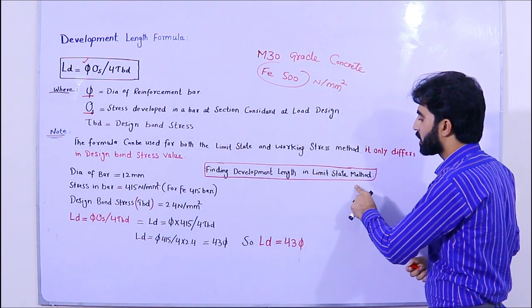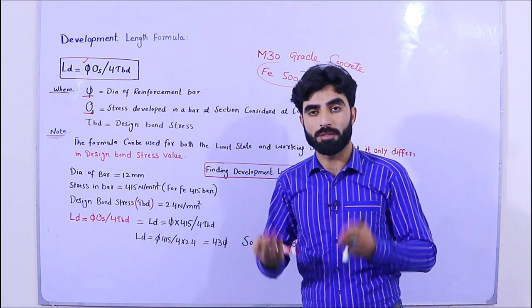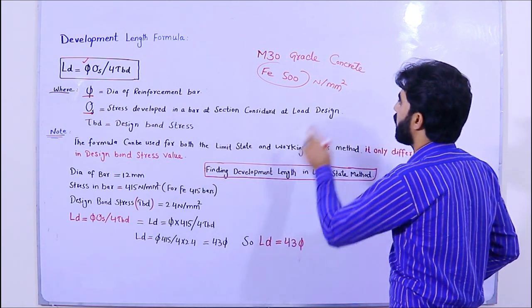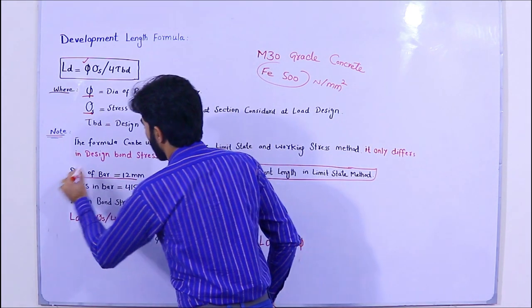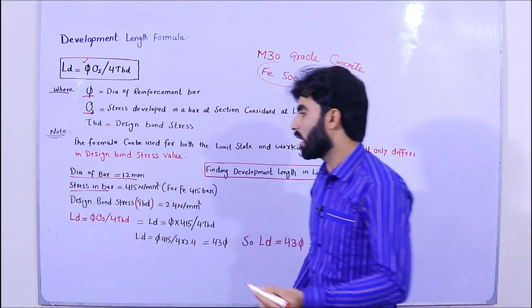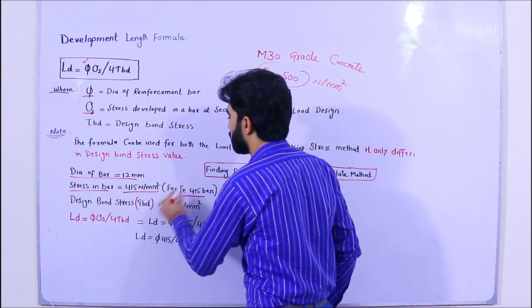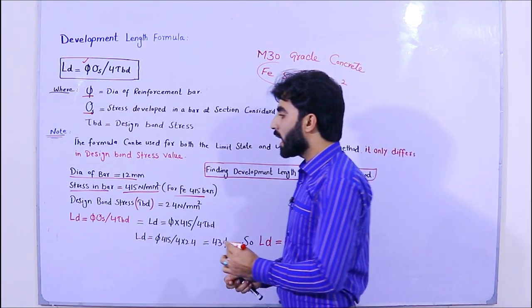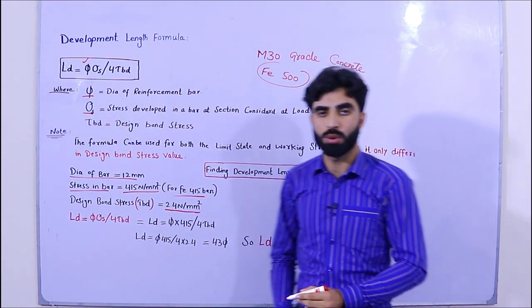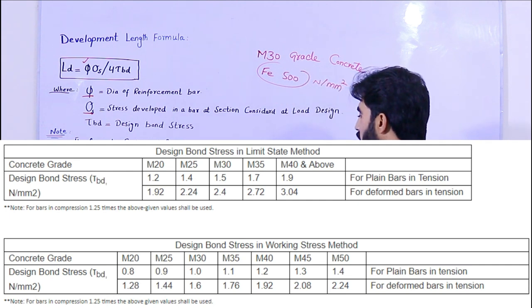Let's get started. Suppose I am finding the development length using the limit state method. In the limit state method we have values for design bond stress for M15, M20, M25, M30, M35, etc. Suppose the diameter of the steel rod is 12 mm, and the strength of steel is 415 N/mm² — that is Fe415. The design bond stress τbd for M30 grade concrete in the limit state method is 2.4 N/mm². You can see this on the screen.